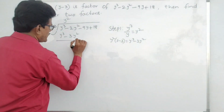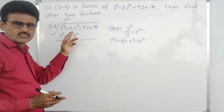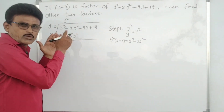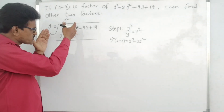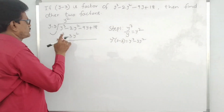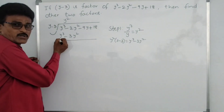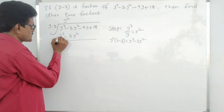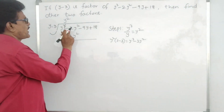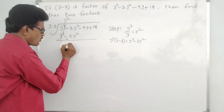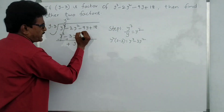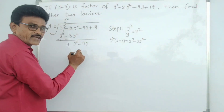Sometimes a y term or y² term may be missing, so write zero times y or zero times y² to avoid confusion with order. Now subtracting y³ minus 3y²: subtraction means we change symbols — plus becomes minus, minus becomes plus. The first terms cancel; minus 2y² plus 3y² gives y². Bring down minus 9y.